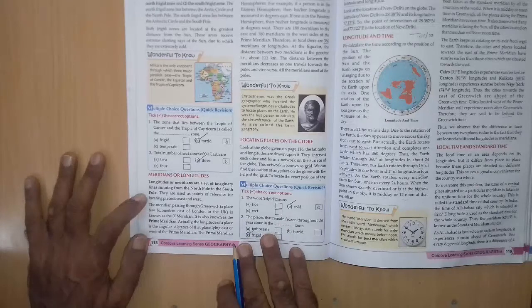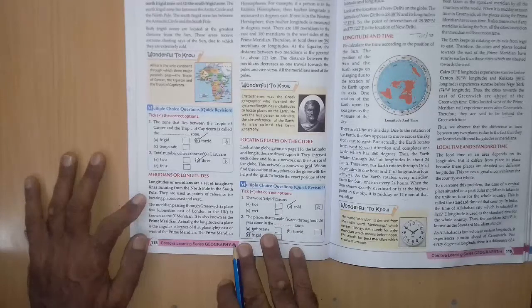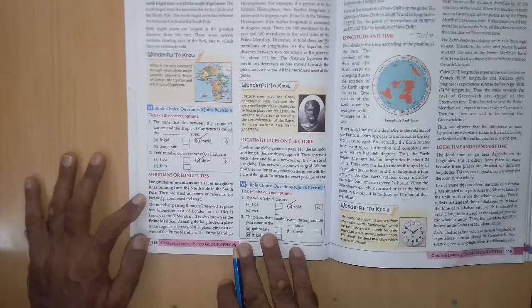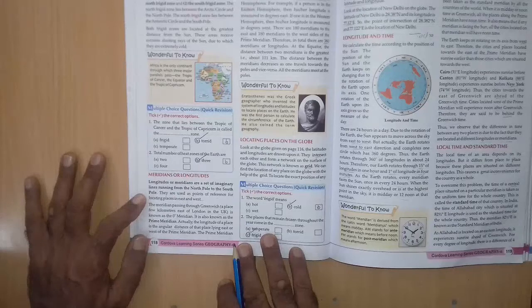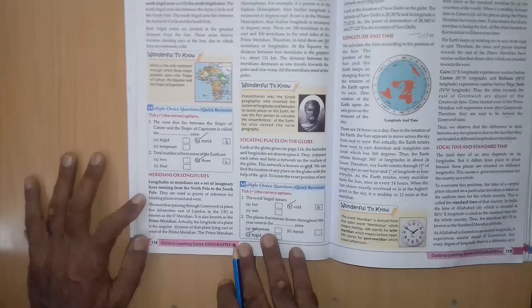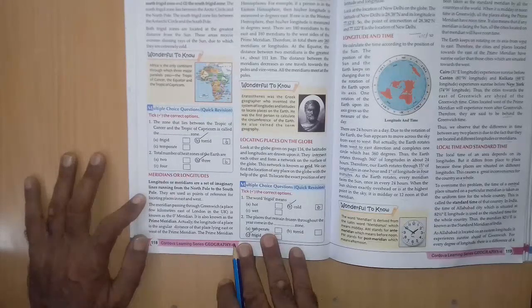2nd question, total number of heat zones of the earth are A 2, B 3, C 4. Right answer is 3.